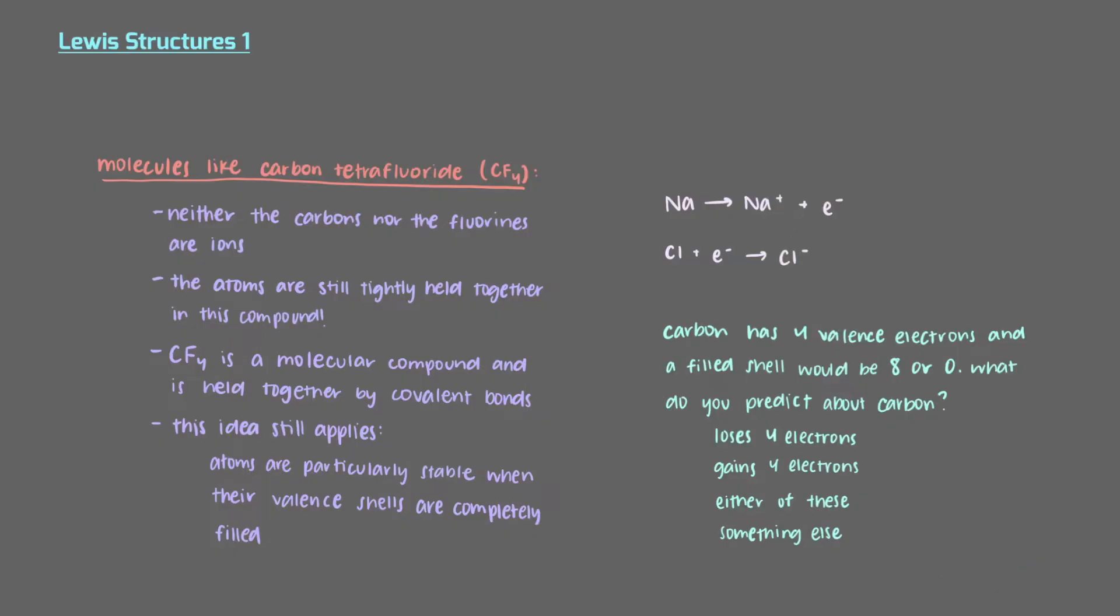Carbon. While gaining or losing 4 electrons would get carbon a full shell, neither of these is going to happen. Carbon is going to form covalent bonds, which means that it is going to share electrons with other atoms in order to get its full shell.